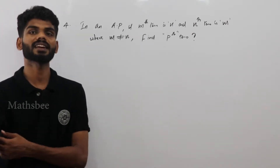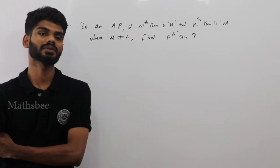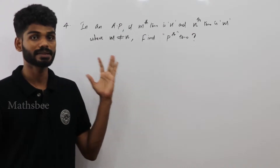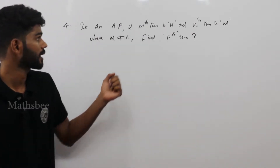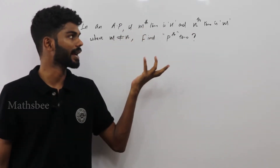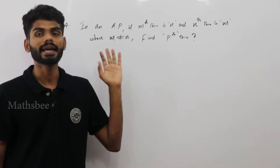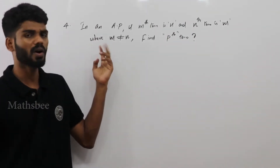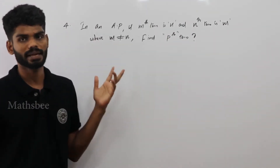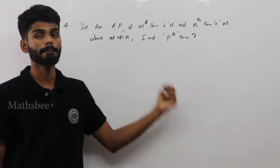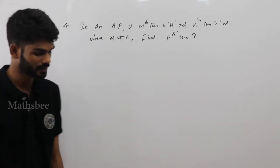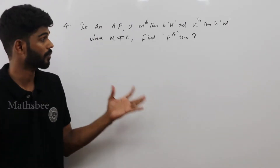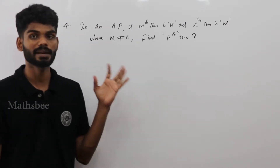Let's talk about a very important question. In Arithmetic Progression (AP), if the Mth term is N and the Nth term is M, where M is not equal to N, find the Pth term. In sequence and series, arithmetic progression is especially important.